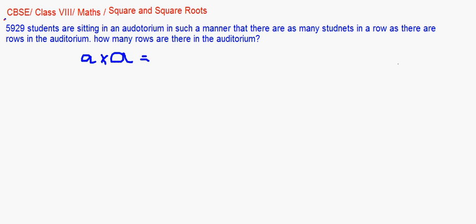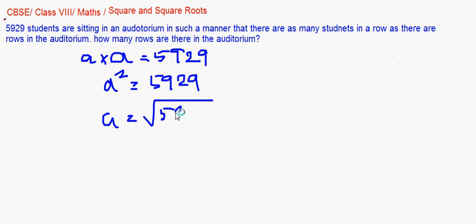So we are assuming a number of rows and a number of columns, so the number of children will be number of rows multiply by the number of children in each row, that is 5929. So we are getting a squared as 5929.